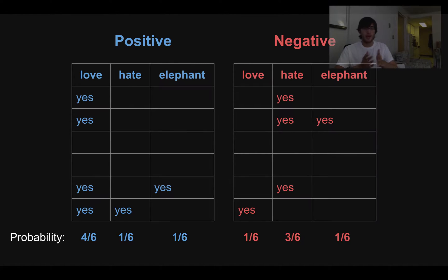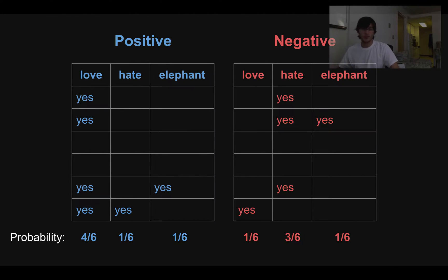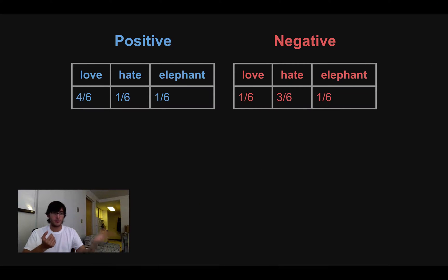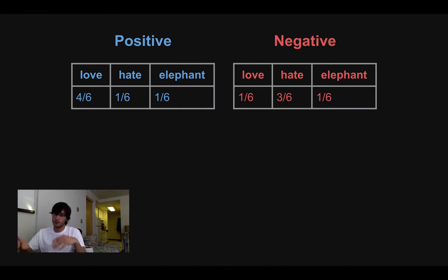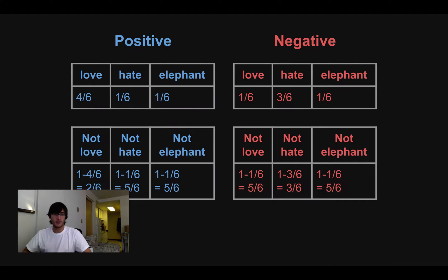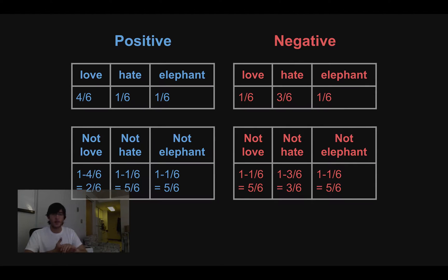Now we're pretty much done looking at the actual data. We've gotten these probabilities and don't need the raw data anymore. I'll make a more compact version of the two tables with just the probabilities. Two important probability ideas: first, if I know the probability of something happening, I can easily find the probability of it not happening — one minus four-sixths gives two-sixths. So the probability of 'love' not appearing in a positive sample is two-sixths. These are called complementary probabilities.